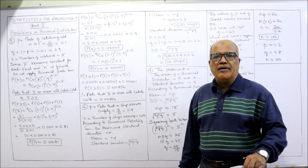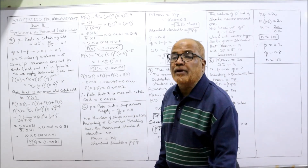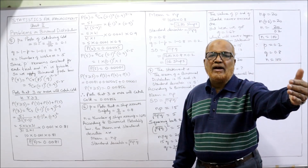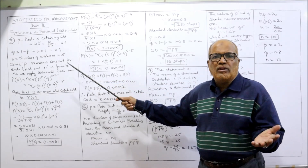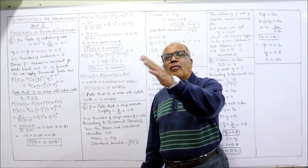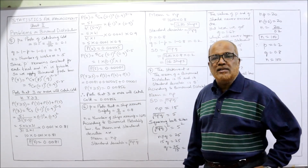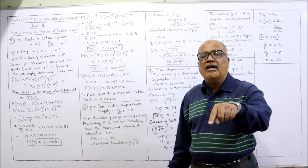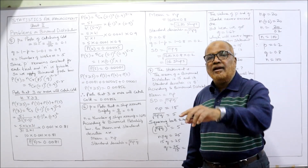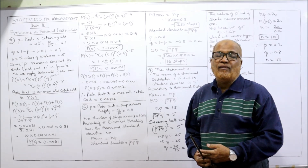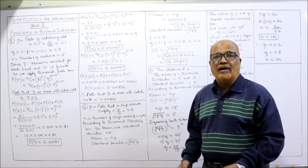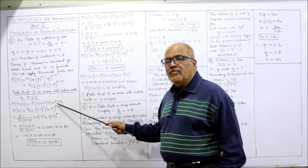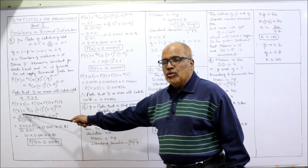The required probability is: what is the probability that three or more workers will catch the cold? Since the maximum is five workers, three or more means R = 3, 4, or 5. So P(R ≥ 3) = P(3) + P(4) + P(5). We calculate each separately.